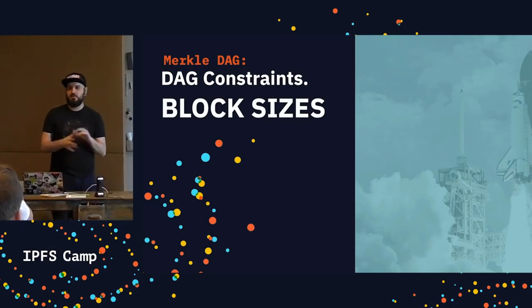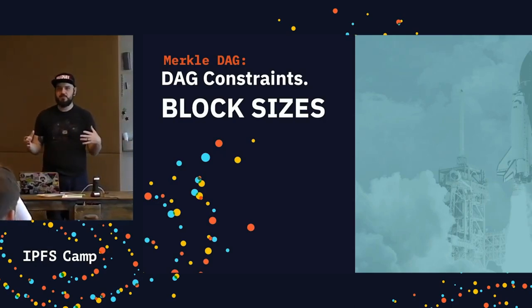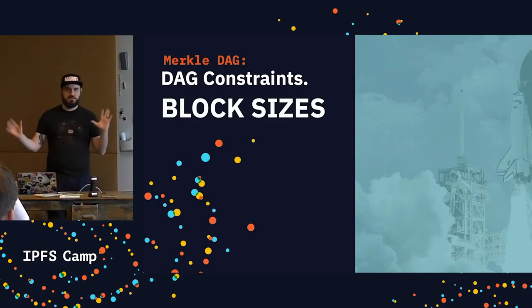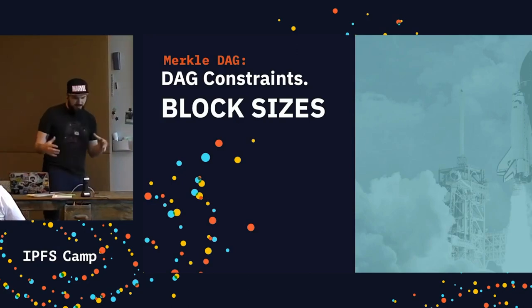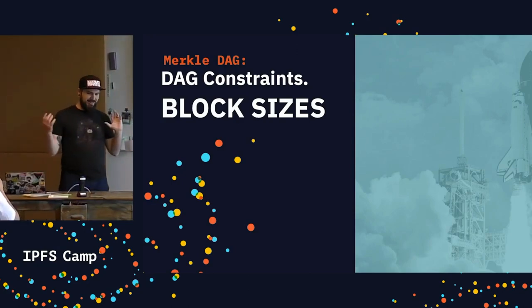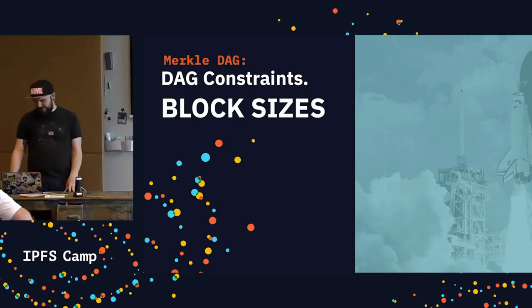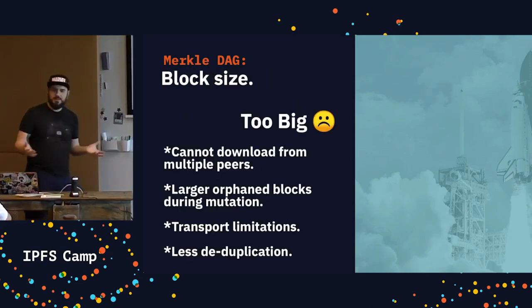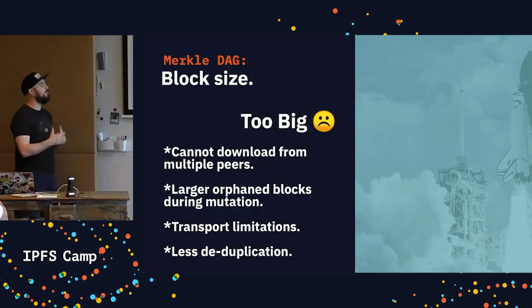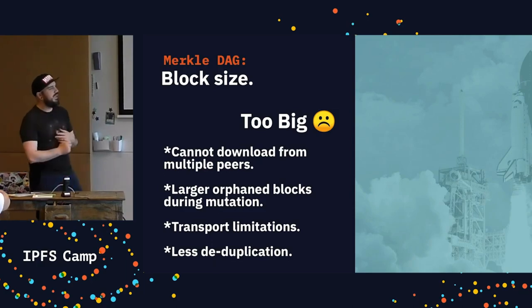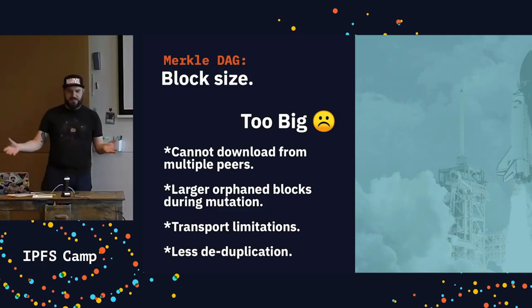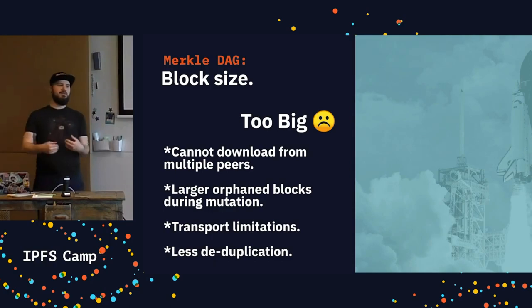Any questions before we get into block sizes? Block sizes are like the three bears — too hot, too cold, just right. Blocks can be too big, and as you start making blocks bigger and bigger, you get a set of different problems. One big one is that you can't download a single block from multiple peers. In an untrusted network, anybody could just give you bad data. The only way you have to validate whether the data was right or not is the hash of the entire block.